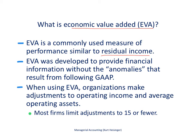EVA was developed to provide financial information without what some would call the anomalies that result from following GAAP, meaning there are some requirements that GAAP imposes on companies that don't necessarily apply to a measure like Economic Value Added. So Economic Value Added provides an opportunity for companies to make some adjustments to operating income and to average operating assets.